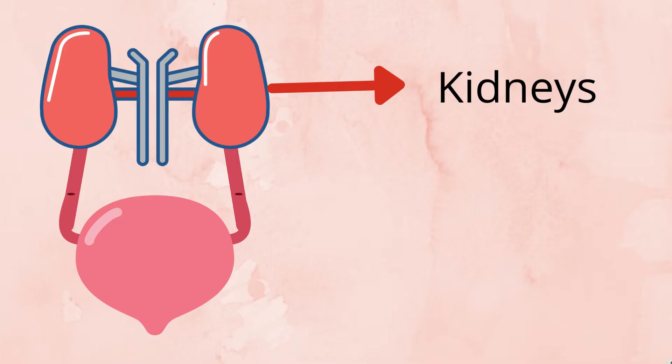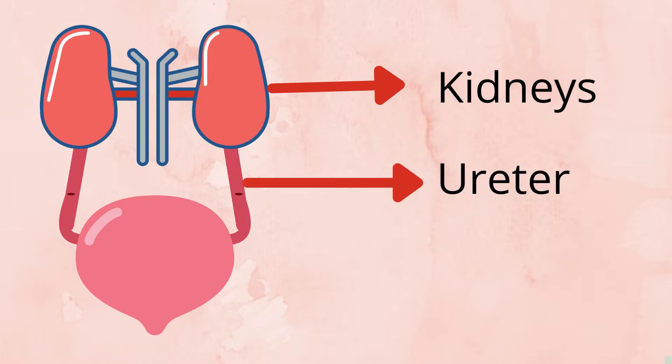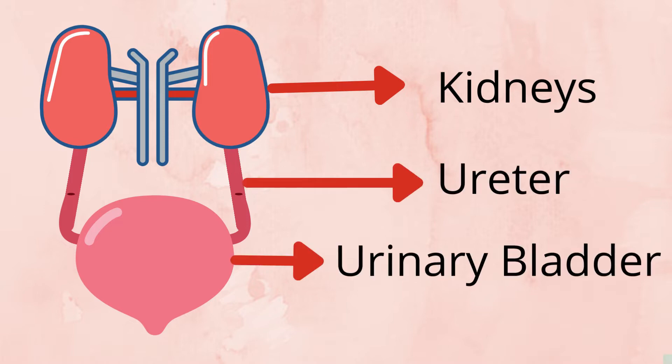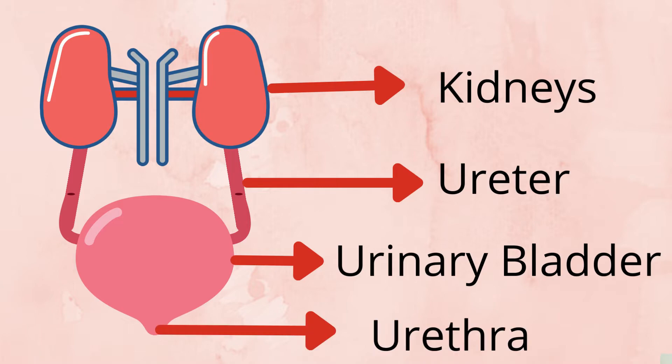The excretory system consists of kidneys, ureters, the urinary bladder, and the urethra.